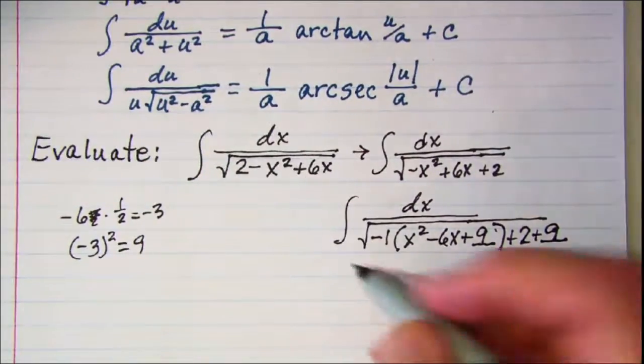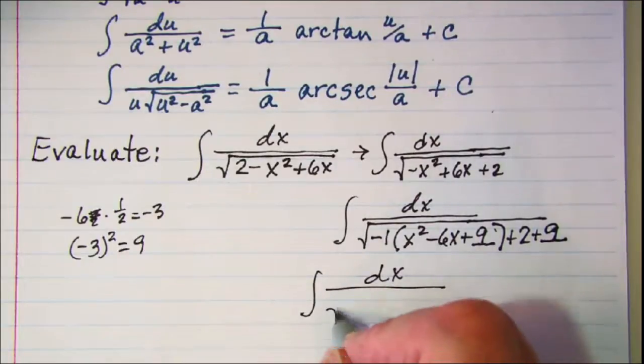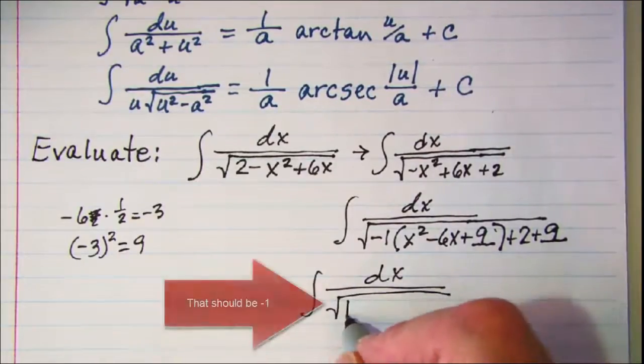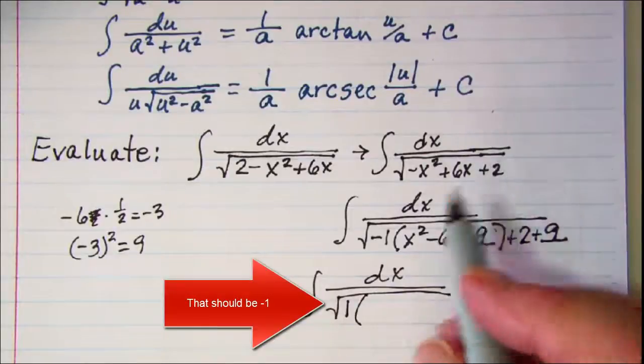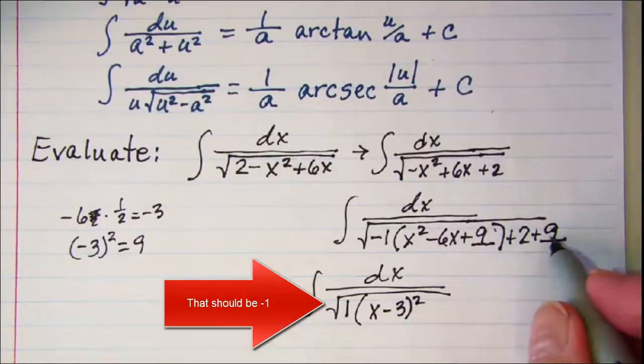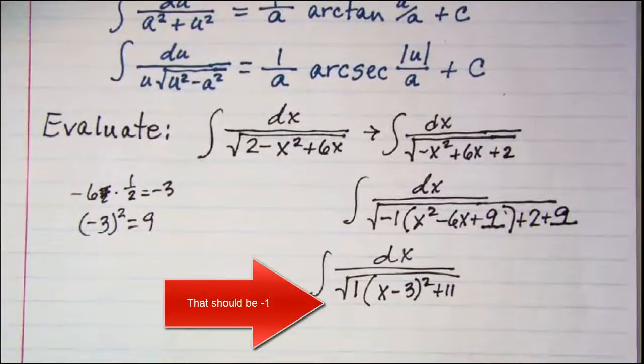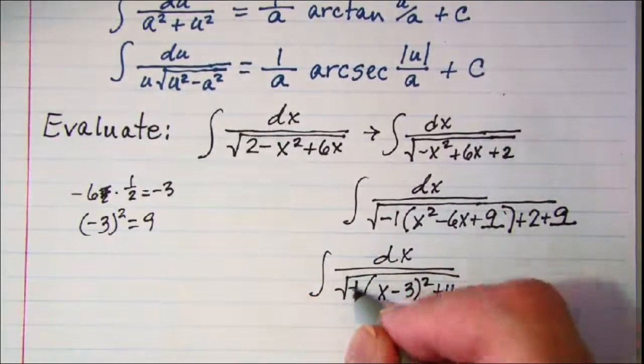Now I have the integral dx over square root of negative 1 times the quantity x minus 3 quantity squared and then plus 11. So 9 plus 2 is 11.